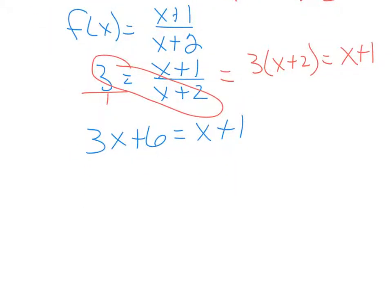Combine like terms. I'm going to subtract this x off of both sides, so I'm going to end up with 2x equals, when I subtract this 6 off to this side, I get -5. You divide by 2, you get x equals -5/2.